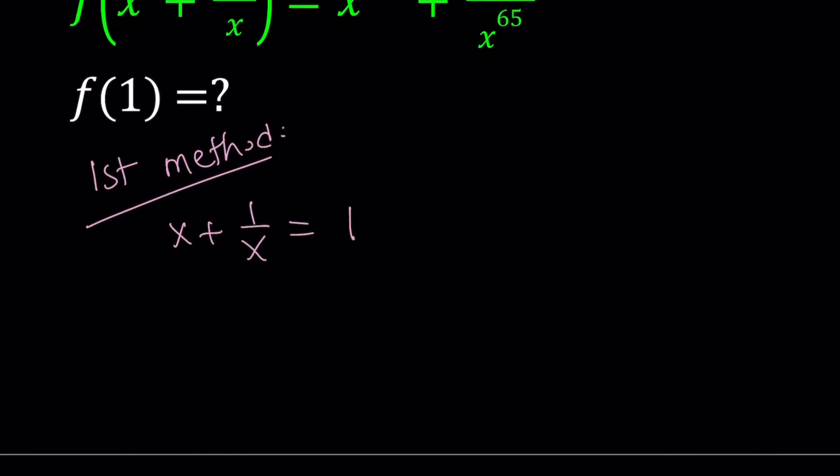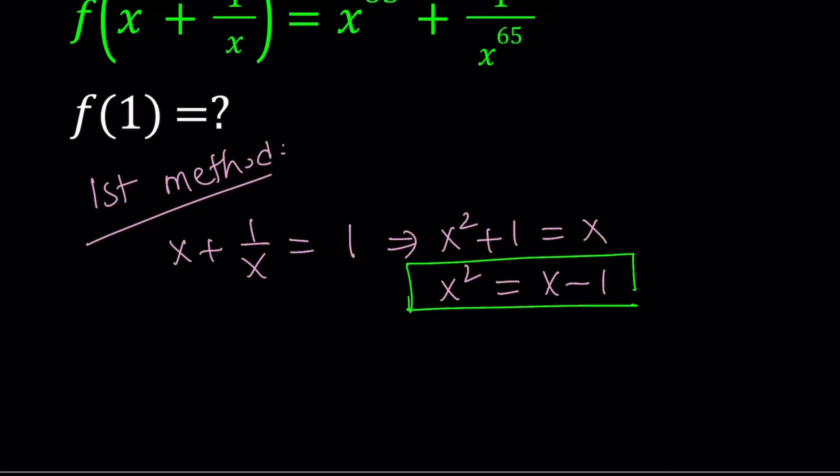From here, I'm going to multiply both sides by x. Obviously, x does not equal 0. So we get x squared plus 1 equals x, and I can write this as x squared equals x minus 1. This is going to be our key to the kingdom. So let's go ahead and save it. So everywhere I see x squared, I'm going to replace it with x minus 1.